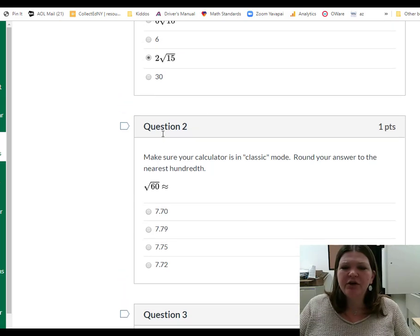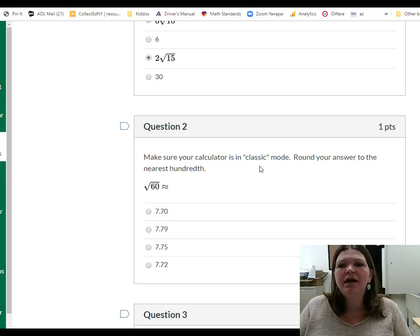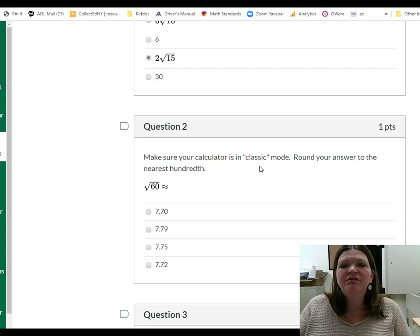Now let's look at question 2. Question 2 said make sure your calculator is in classic mode. This time I want it in classic mode. Round your answer to the nearest hundredth. Why am I asking you to flip to classic mode? Classic mode behaves more like you guys' phones or the old-fashioned calculators we're used to. Almost always spits out a decimal approximation.